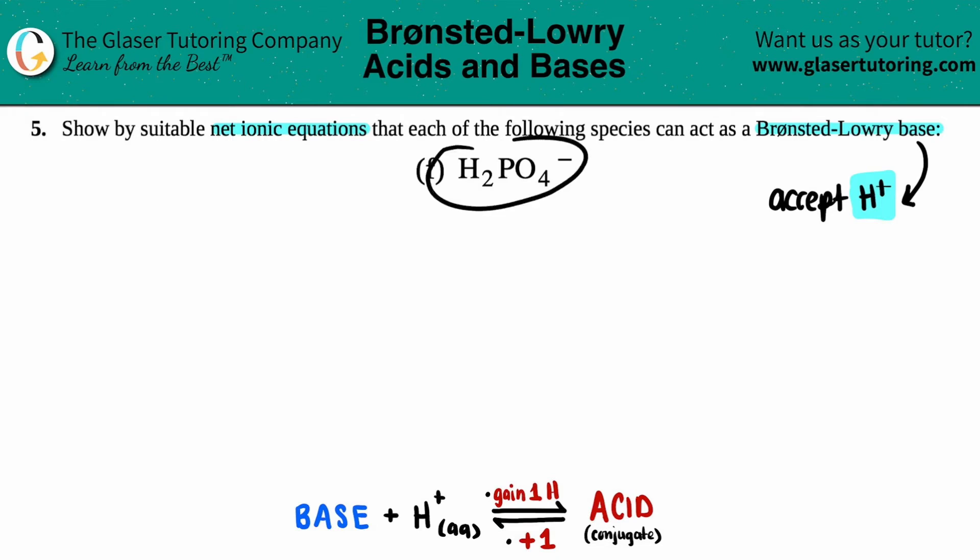So my base is this. So that's what I'm going to start with. H₂PO₄⁻ plus H⁺. And anytime that you have charged ions in a net ionic equation, that's always going to be aqueous. I could say aqueous and aqueous. And also acids and bases, they're going to be aqueous as well.